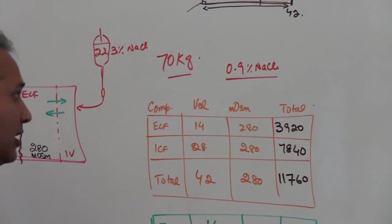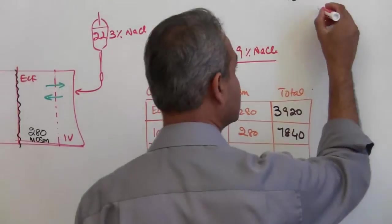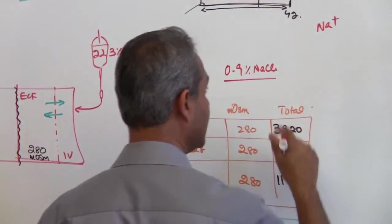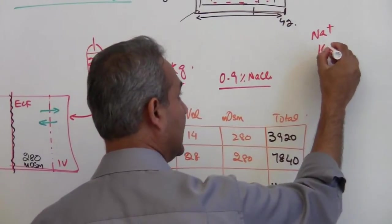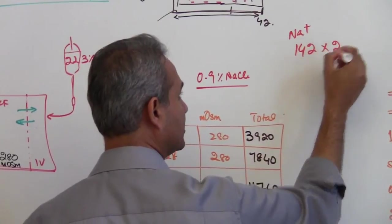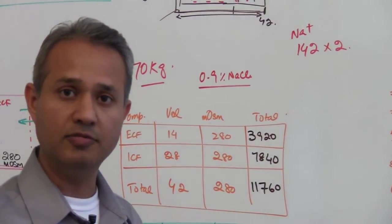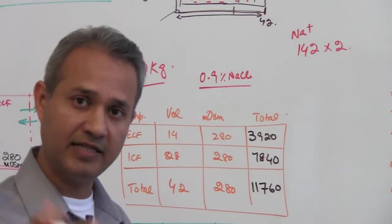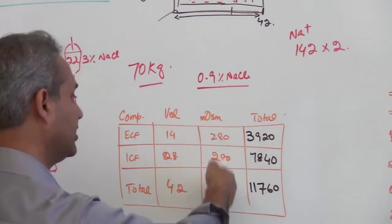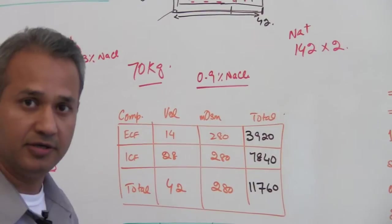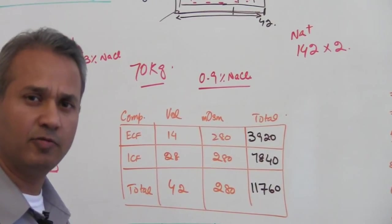You know, a normal rule of thumb is that you pick up the sodium concentration in the extracellular fluid and almost double it. So normally sodium is about 142 milliosmoles, so you double that and that would give you roughly the osmolarity of the body. So there are multiple formulas, there are many various ways.